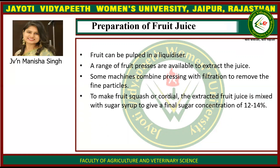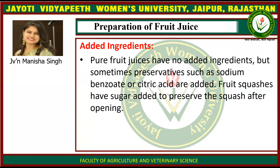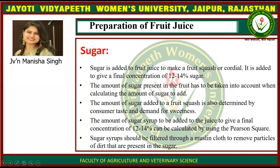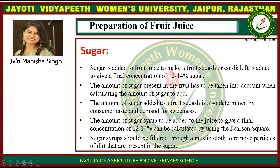To make fruit squash or cordial, the extracted fruit juice is mixed with sugar syrup to give a final sugar concentration of 12 to 14%. Added ingredients: pure fruit juices have no added ingredients, but sometimes preservatives such as sodium benzoate or citric acid are added. Some fruit juices have sugar added to preserve the squash after opening. Sugar is added to fruit juice to make a fruit squash or cordial, giving a final concentration of 12 to 14% sugar.